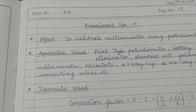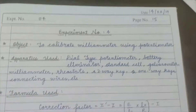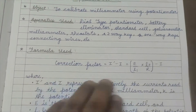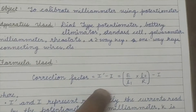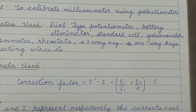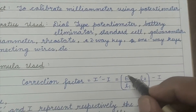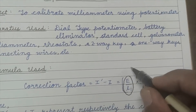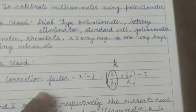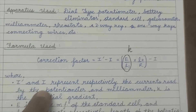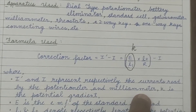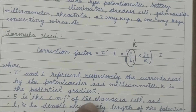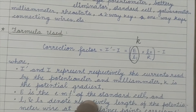We need a correction factor to see the calibration: correction = I' − I, where I' = (E/L1) × (L2/K). Here I and I' represent respectively the current read by the milliammeter and the current measured by the potentiometer, and K = E/L1 is the potential gradient.